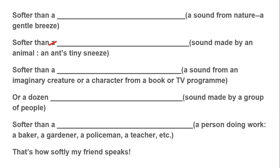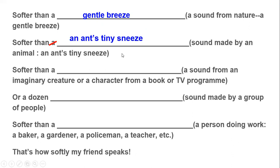You have to fill in the blanks according to the directions given in the brackets. The first blank is 'softer than a' — and for a sound from nature, I'm going to use 'a gentle breeze.' So: softer than a gentle breeze. The second blank is also 'softer than a' — a sound made by an animal. The textbook gives the example of an ant's tiny sneeze, so: softer than an ant's tiny sneeze.